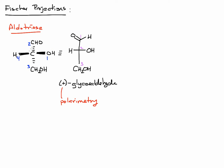If we make a wheel of one, two, and three, we can see that we're going in this direction. So that's counterclockwise, which would be S. However, the lowest priority group is coming towards us, so we have to reverse our initial decision there. So this is actually going to be R.